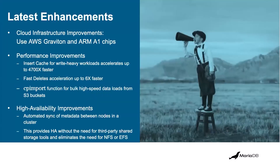Some of the latest enhancements we've done to this product: we've refactored our engine to work with ARM processors, which is a great cost savings. From what I understand, there could be as much as 30% savings on AWS Graviton servers using the new ARM A1 chips. Also, all of the new Apple Macintosh machines — all the MacBook Pros — are using ARM processors now too, which allows you to do some development work on your own laptop, which is what I'm doing here.